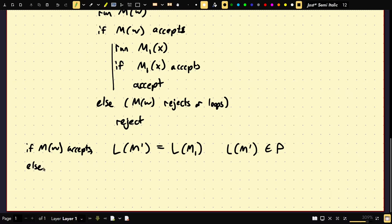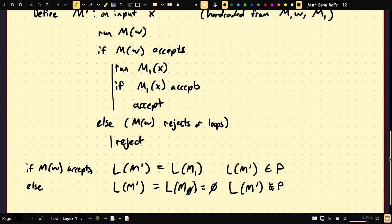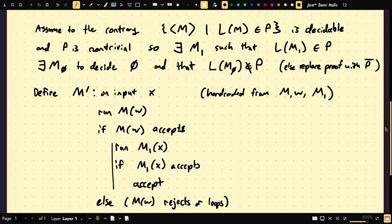Else, so that means M1 accepts or rejects, excuse me, M1 rejects or loops, the language of M' is going to go to this block. We're going to just reject all strings. So the language here is going to be equal to the language of the Turing machine, which accepts nothing, which is just the empty set. So that implies then that the language of M' is going to not be in P, because we assumed, without loss of generality, that the empty set was not in P.